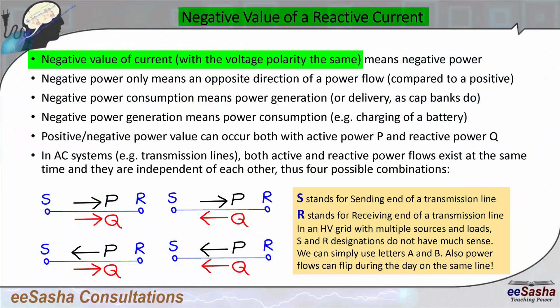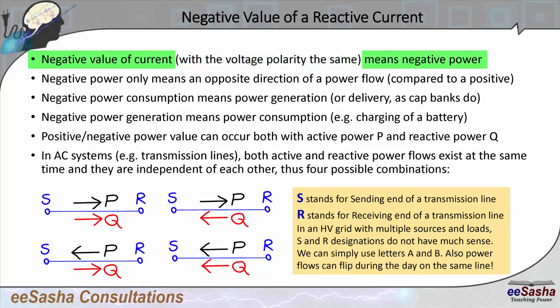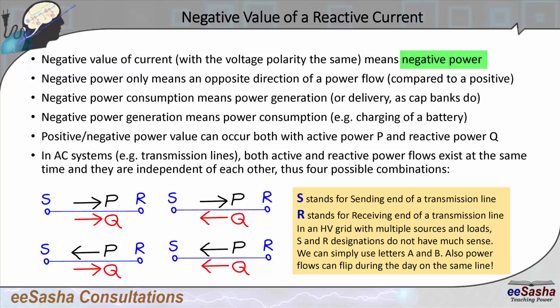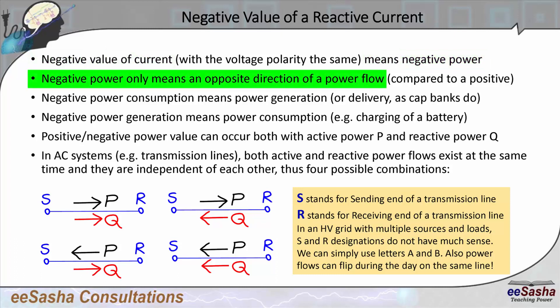The negative value of current, when voltage is the same and you don't change the polarity of voltage, means negative power. The question is: what is negative power? Negative power simply means the opposite direction of power flow. So if you had one direction and now you're getting a negative value, that means it just flows in the opposite direction.